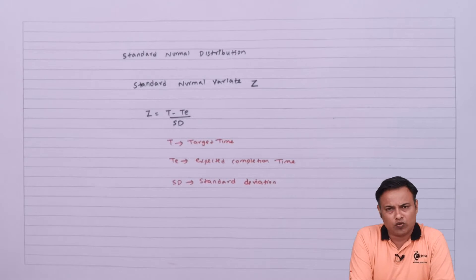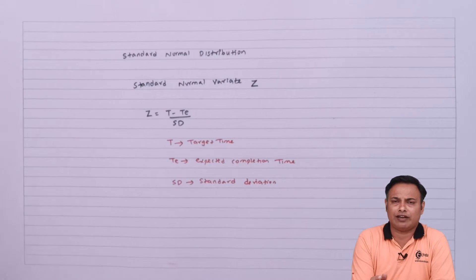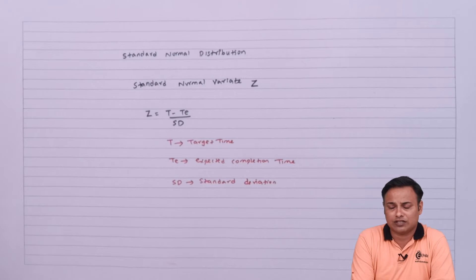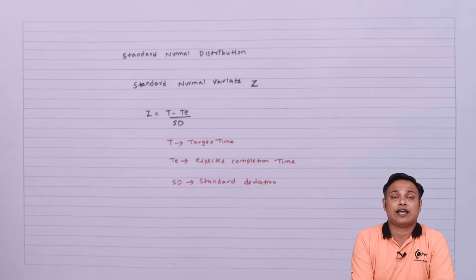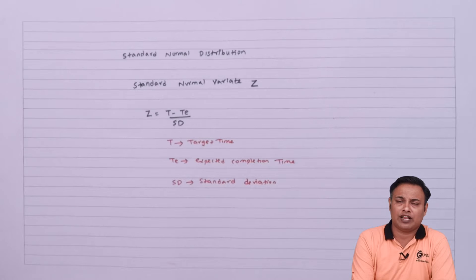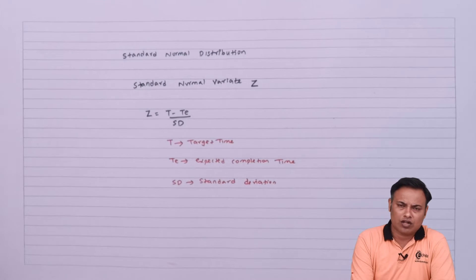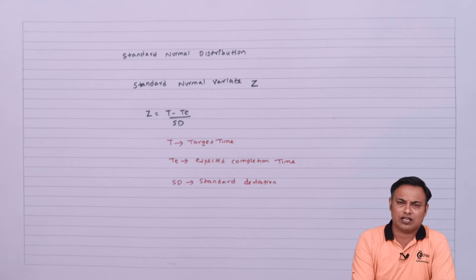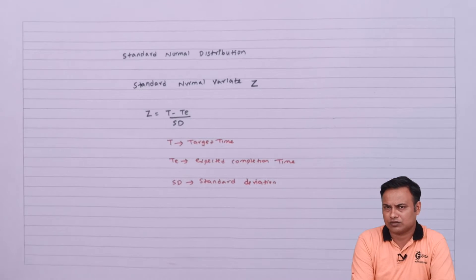So these are the things we require, and then we get a value called Z, which is nothing but the standard normal variate. Using this value we refer the normal distribution tables where the values are given in rows and columns.